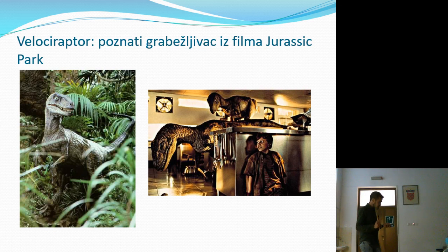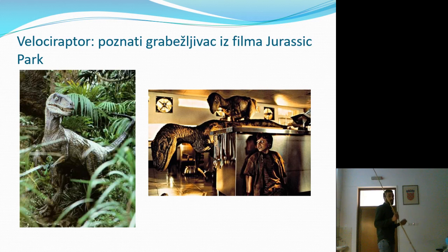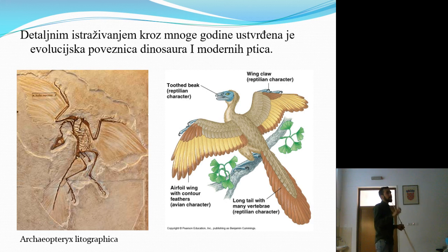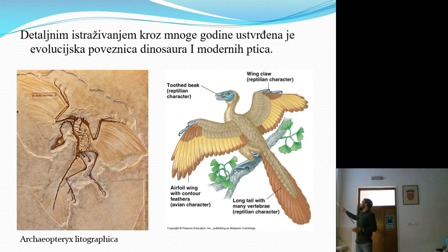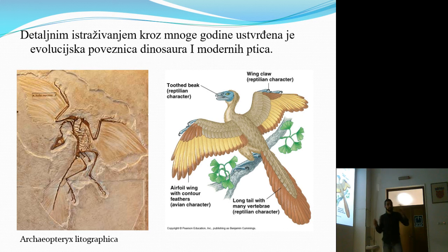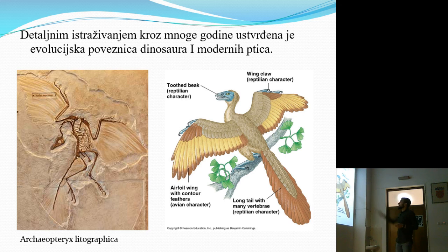Od početka istraživanja dinosaura, znanstvenici pronalaze sve više dokaza da su ptice evolucijski potekle od dinosaura. Niti jedno takvo predavanje ne može proći bez najpoznatijeg fosila - Archeopteryx lithographica. Upravo na njemu možemo primijetiti prijelazna stanja između dinosaura i ptica: već vidimo kljun, krila i perje, ali i neke karakteristike dinosaura koje današnje ptice više nemaju, poput zuba u kljunu.